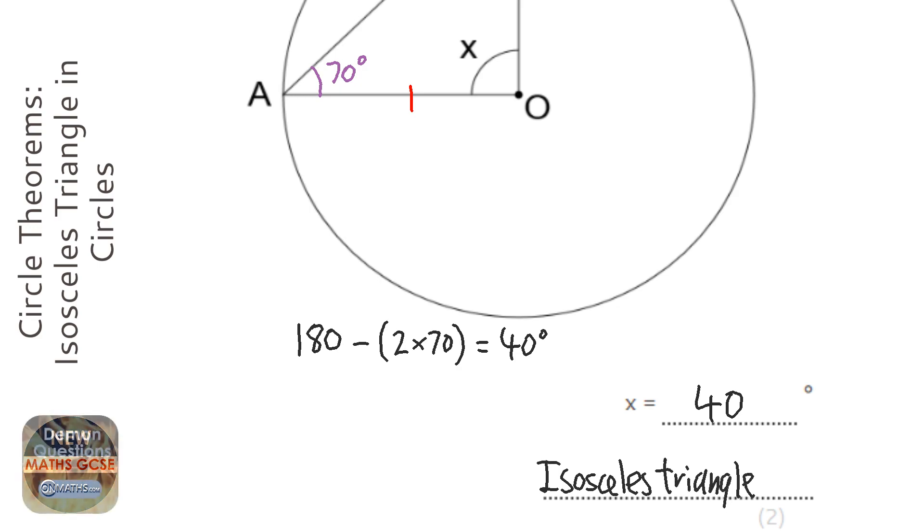Try and be as descriptive as you can. So I might write the two angles in an isosceles triangle are equal, or something like that. There's no fixed sentence you have to write, as long as you've got the word isosceles.